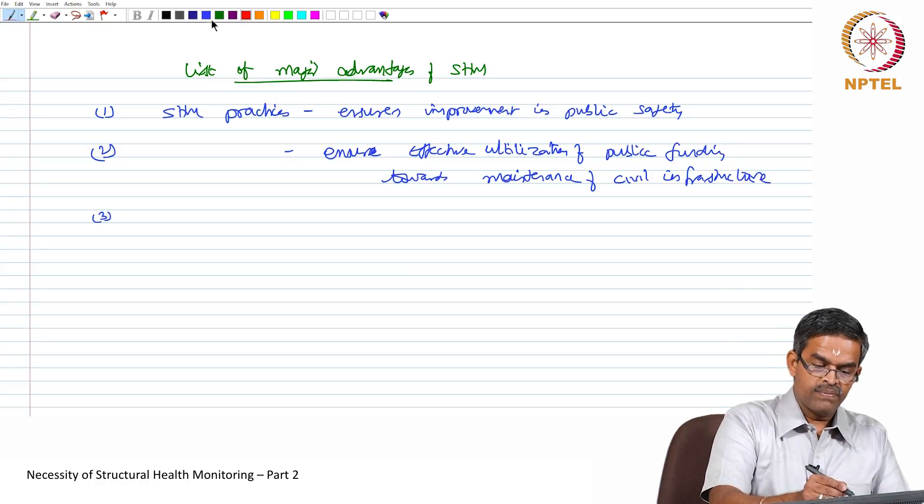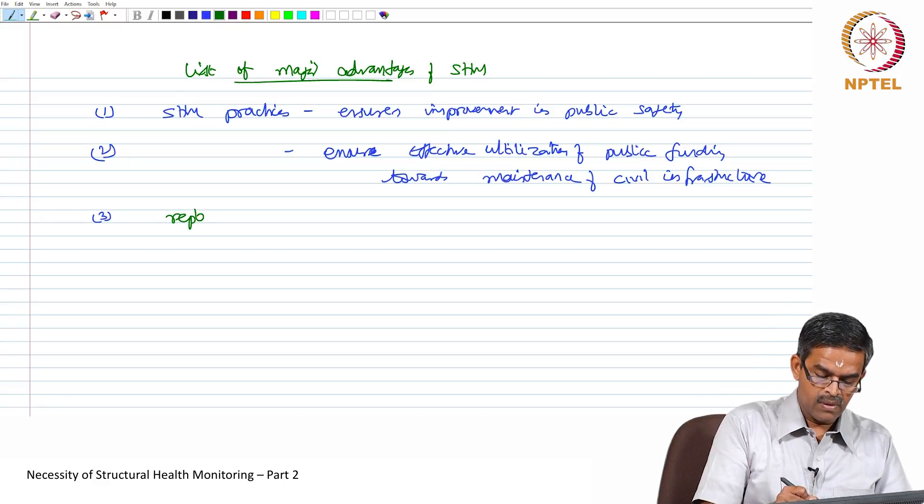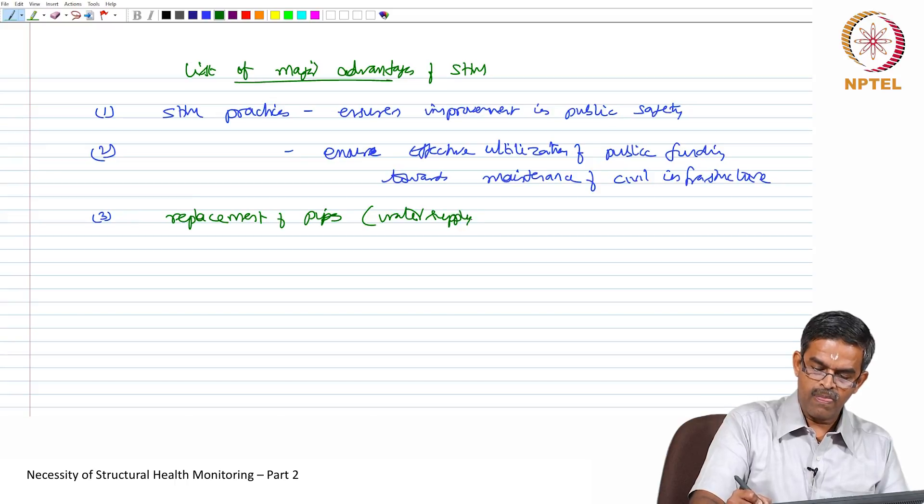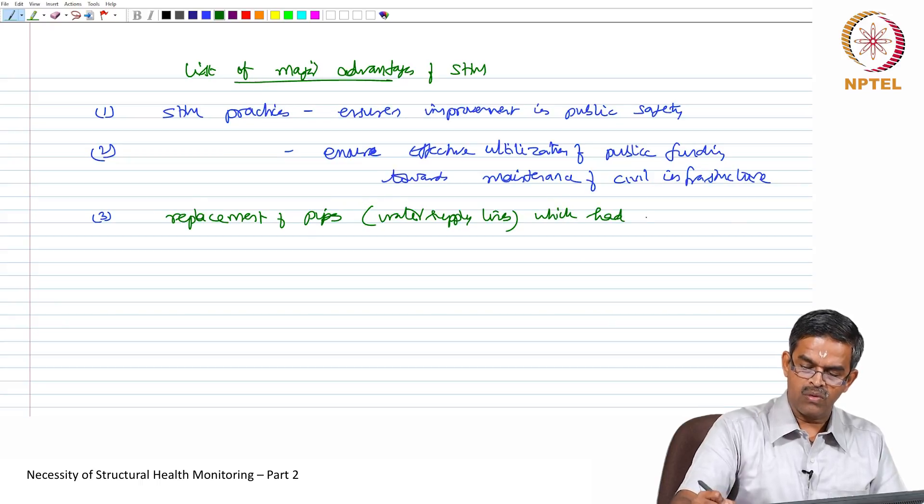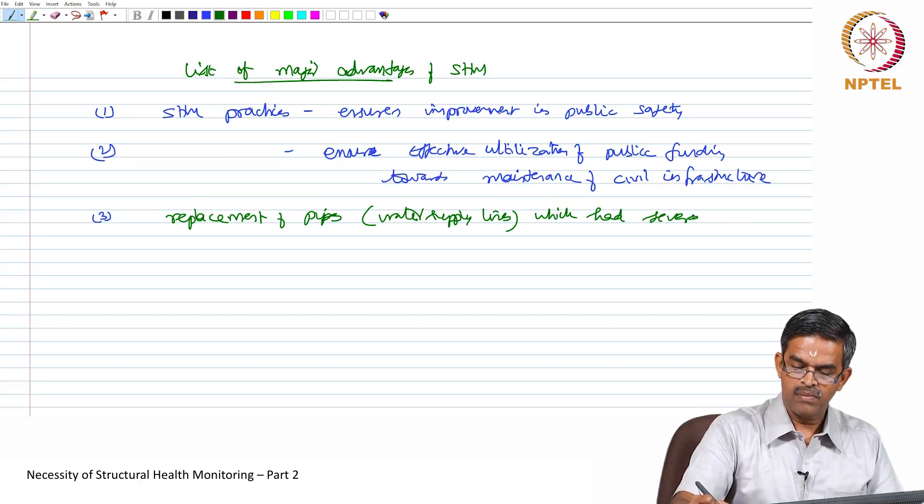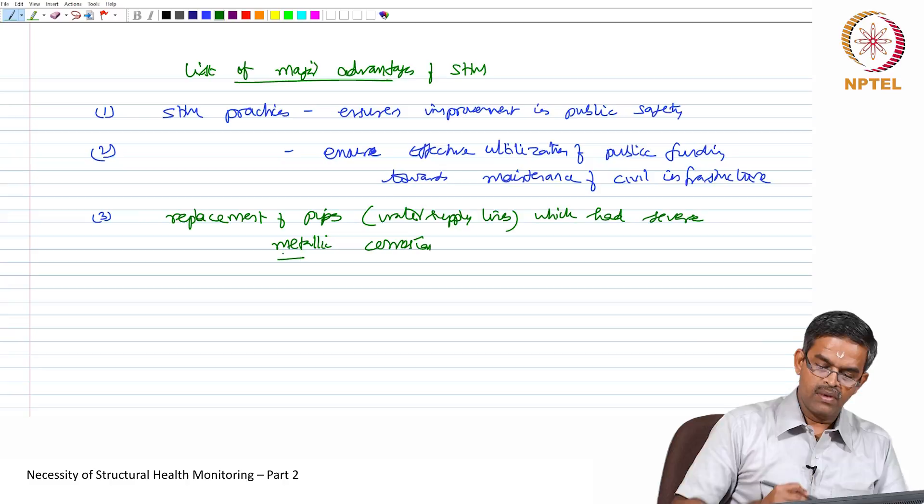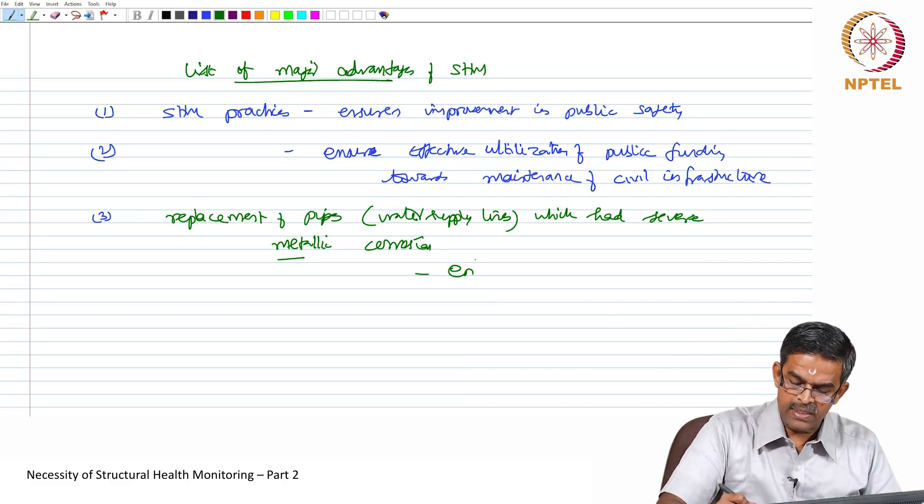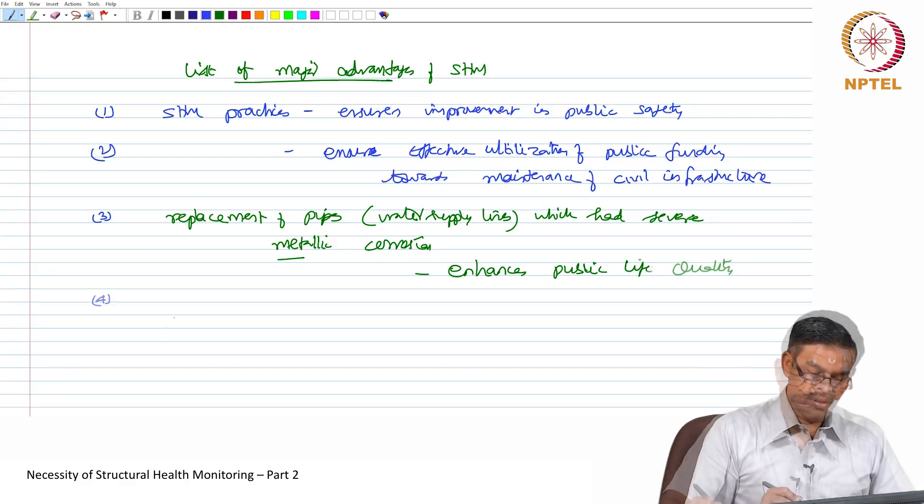One classical example where SHM had a very serious advantage is that replacement of pipes, that is water lines, which had severe metallic corrosion. Replacement of these pipes as a preventive maintenance enhances quality of public life.